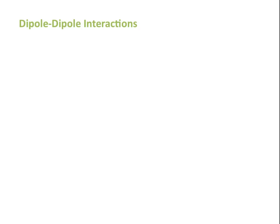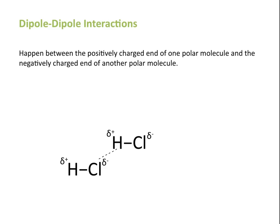Similar to ion-dipole interactions are dipole-dipole interactions, which occur between the positively charged end of one polar molecule and the negatively charged end of another polar molecule. For example, between two molecules of HCl, which have a partial positively charged end and a partial negatively charged end due to the difference in electronegativity between the hydrogen and chlorine atoms, you will see interactions between the positively charged end of one HCl molecule and the negatively charged end of another. The strength of these dipole-dipole interactions increases with increasing polarity of the molecules.